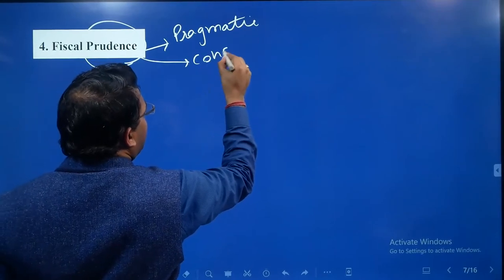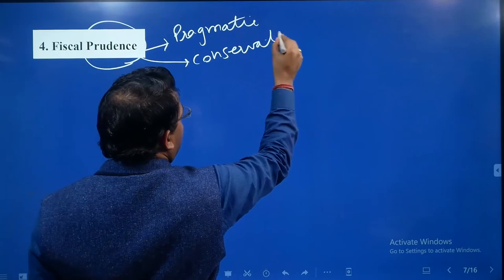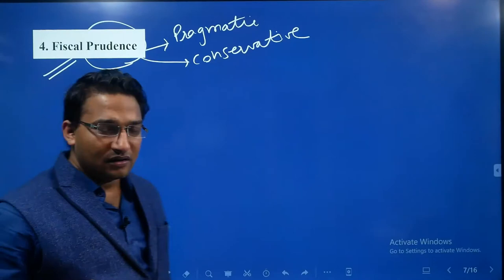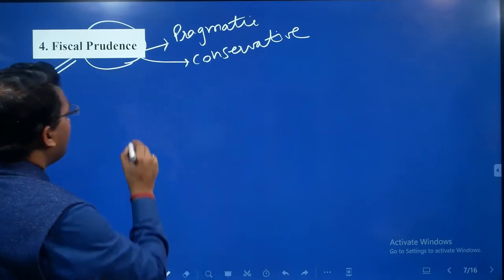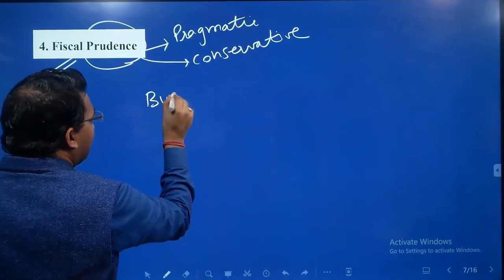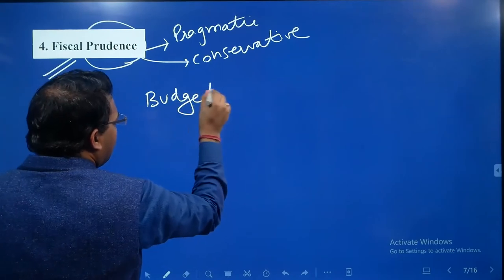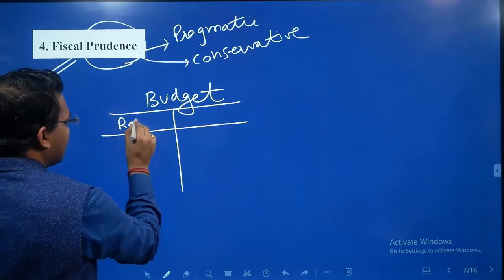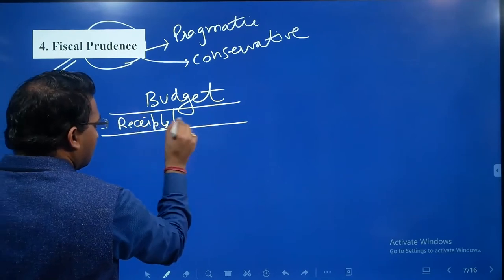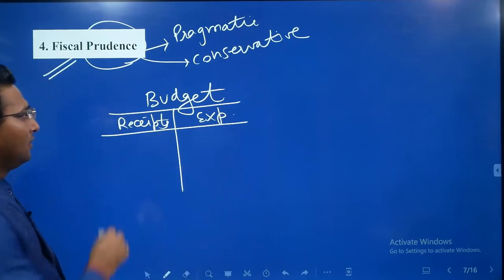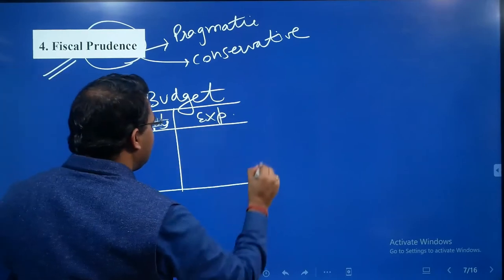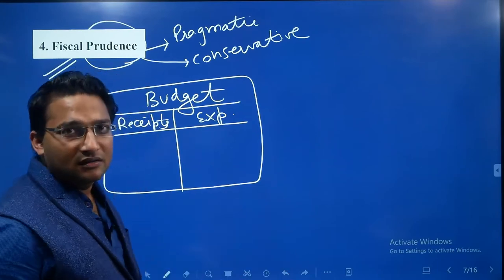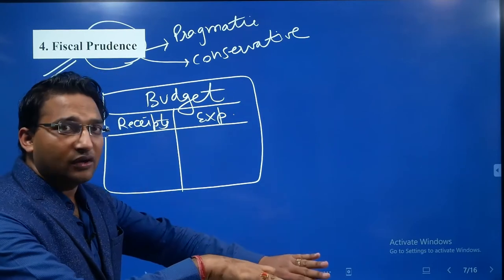In the context of fiscal matters, what does this mean? When the government is preparing the budget, it is estimating two things: the receipts and the expenditure. These estimates of receipts and expenditure should be pragmatic and conservative, meaning